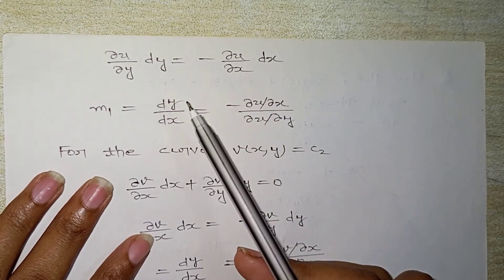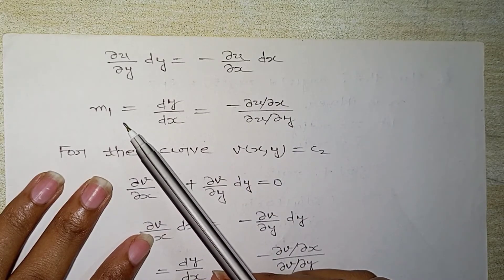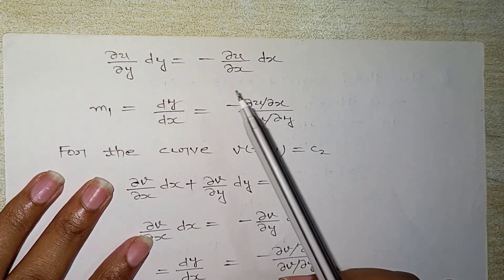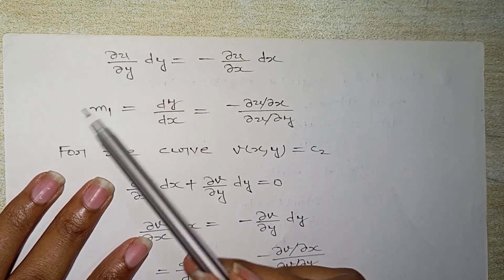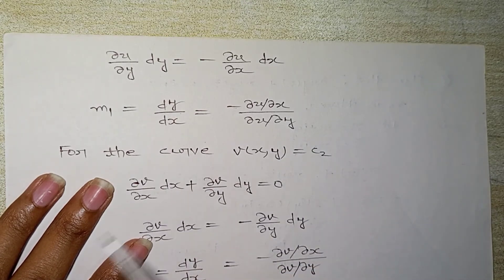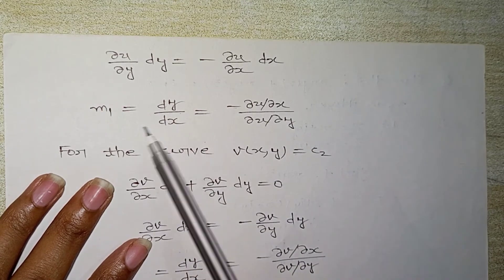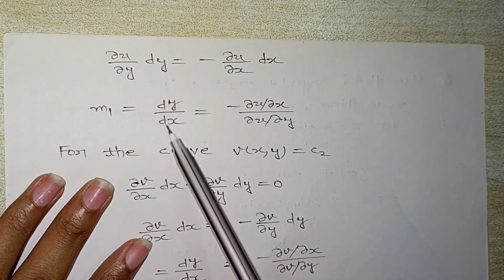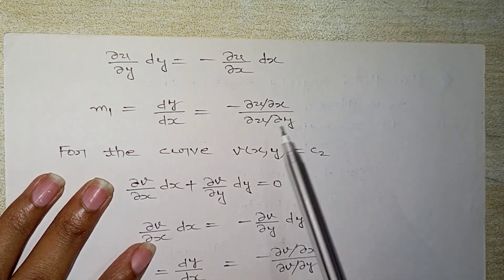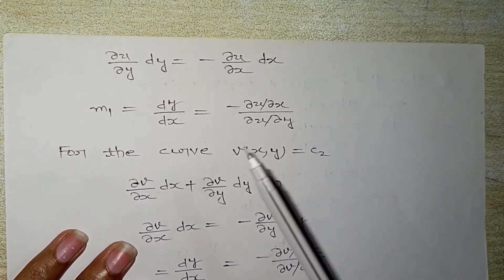In the orthogonal system, we need to prove that M₁ · M₂ = −1. From the first curve, M₁ = −(∂u/∂x)/(∂u/∂y). Now we move on to find M₂ from the second curve.